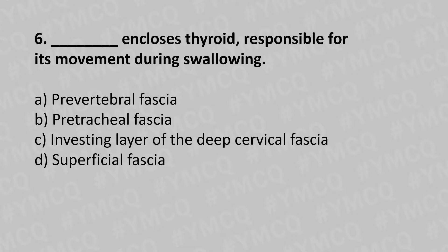Now let's move to question number six. Which fascia encloses the thyroid and is responsible for its movement during swallowing? Option A - pre-vertebral fascia, option B - pre-tracheal fascia, option C - investing layer of deep cervical fascia, option D - superficial fascia. The answer is option B - pre-tracheal fascia.